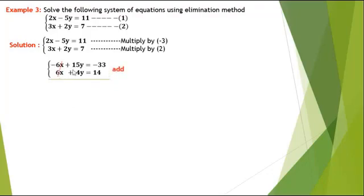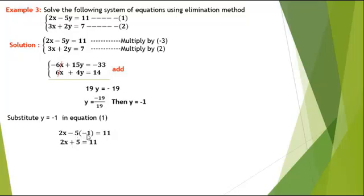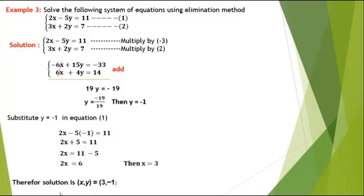Minus 6x plus 6x equals 0. 15y plus 4y equals 19y. Minus 33 plus 14 equals minus 19. Then y equals minus 19 over 19, so y equals minus 1. To calculate x, substitute y equals minus 1 into equation 1: 2x minus 5 times minus 1 equals 11, so 2x plus 5 equals 11. Taking 5 to the right: 2x equals 6, then x equals 3. The solution is (x, y) = (3, -1).